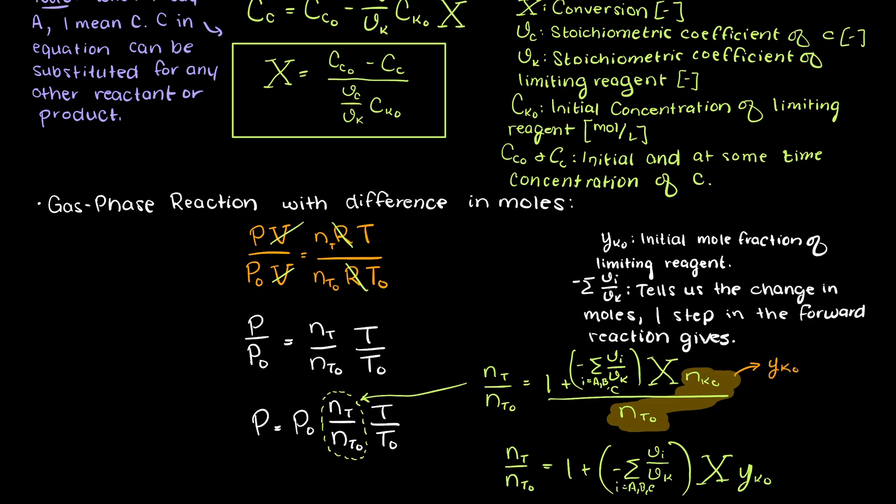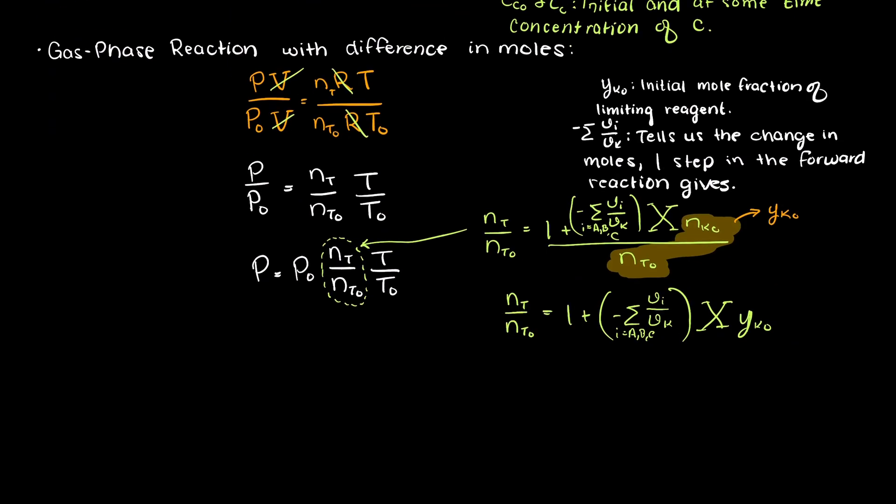So it is the sum of every stoichiometric coefficient in our reaction divided by the stoichiometric coefficient of our limiting reagent. Now after the substitution, we can substitute the moles of our initial limiting reagent over the total moles of our system, as our initial limiting reagent mole fraction like so.